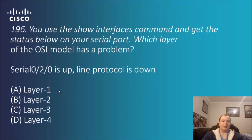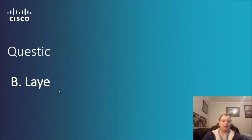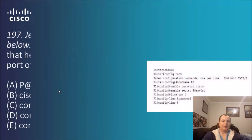Question 196: you use the show interfaces command and get the status on your serial port — which layer of the OSI model has a problem? Serial 0/2/0 is up, but line protocol is down. This relates to a problem at layer 2 of the OSI model.